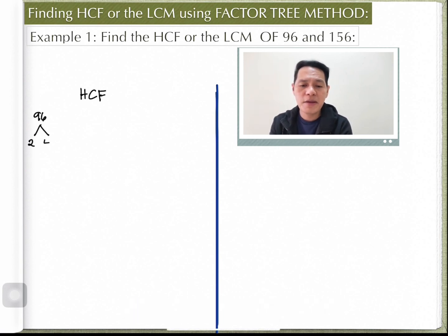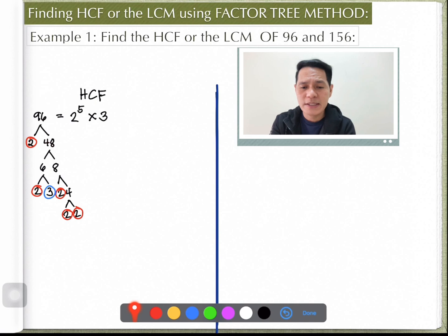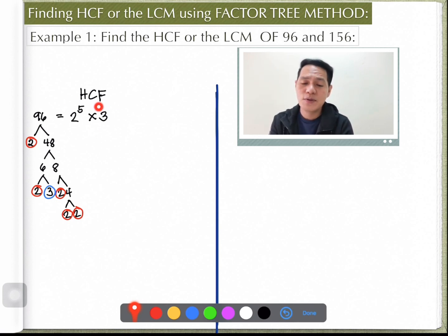For 96, using the factor tree method: 96 gives 2 and 48. I chose 2 because it's easier. Then 48 gives 6 and 8; 6 gives 2 and 3; 8 gives 2 and 4; and 4 gives 2 and 2. Highlighting all the 2s, we count 1, 2, 3, 4, 5 — so the prime factors of 96 are 2 to the power of 5 times 3.